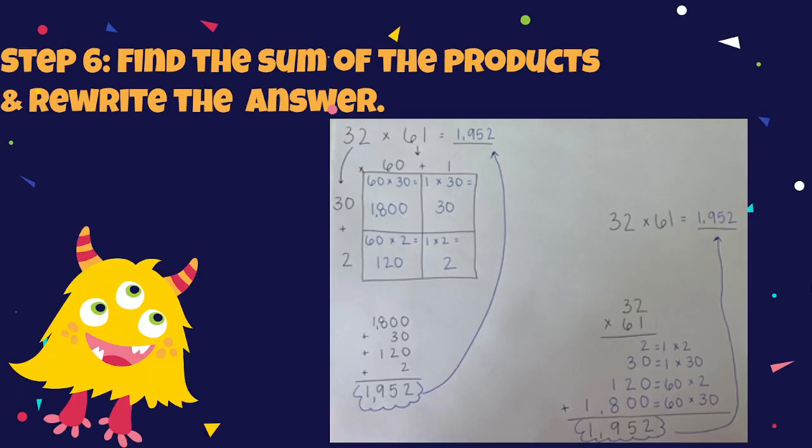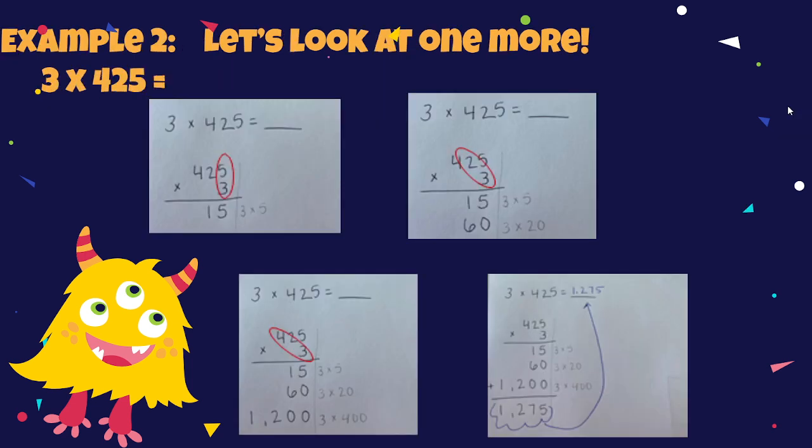Now you take all of your partial products and you find the answer for your final product. If you add all of these together, you will get 1,952, which will be your final product. And if you do the same with the ones that you have in your area model, you should get the same result, 1,952. So that was a quick review on how to do area model with partial products.